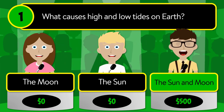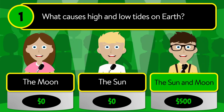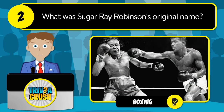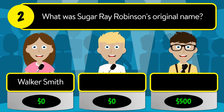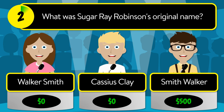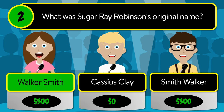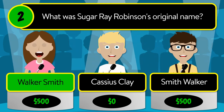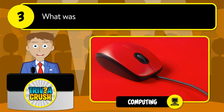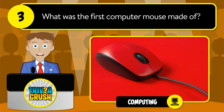The correct answer is the sun and moon. Question number two: what was Sugar Ray Robinson's original name? Was it Walker Smith, Cassius Clay, or Smith Walker? The correct answer is Walker Smith.